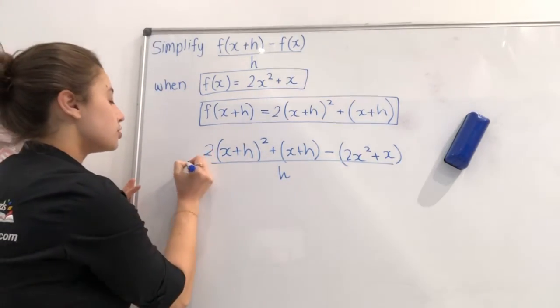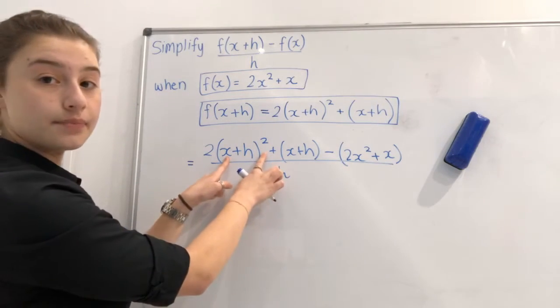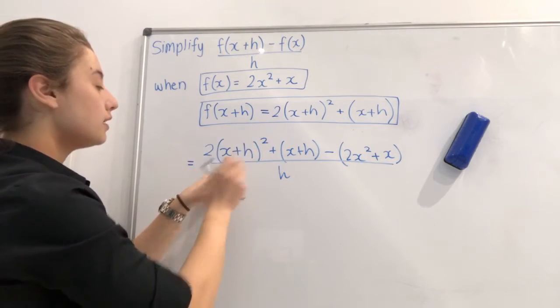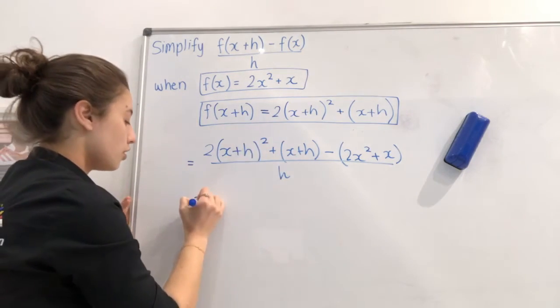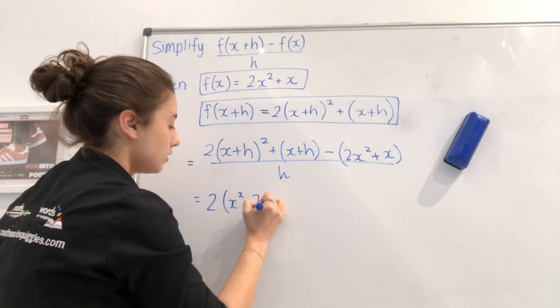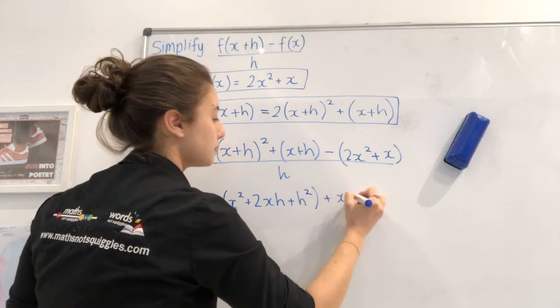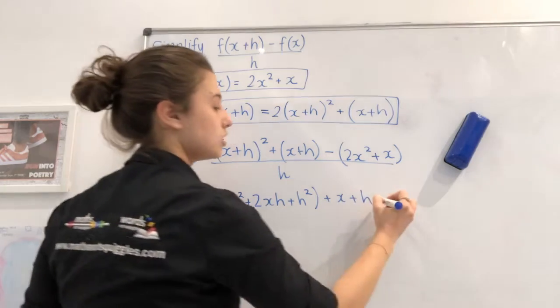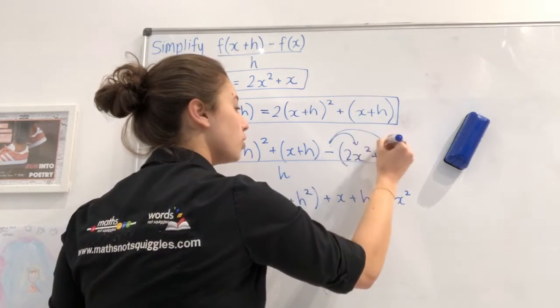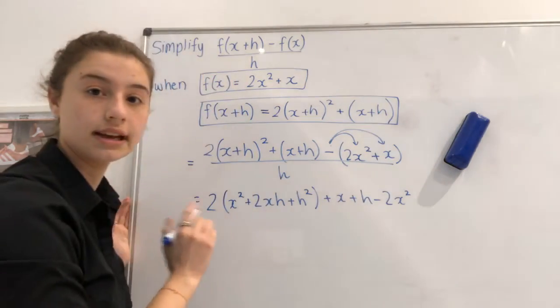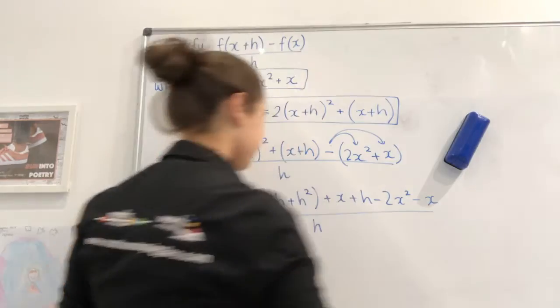So the next thing we want to do is we want to expand and simplify where possible. So I'm going to start with this bracket here. And we know the quick way to square a bracket is square the first, double the product, square the last. So we've done this before, x squared plus 2xh plus h squared. Then I'm just going to write plus x plus h minus 2x squared. We're applying the minus there. And then we also know that a negative times a positive is going to give us a negative, so it's going to become a negative x all over h.